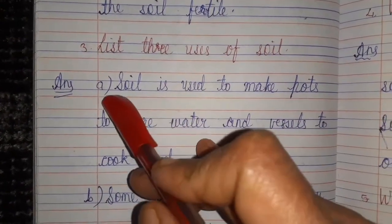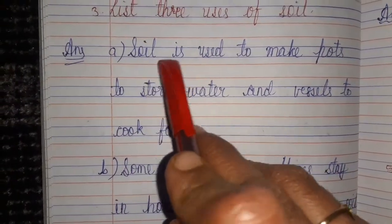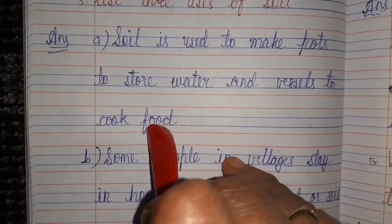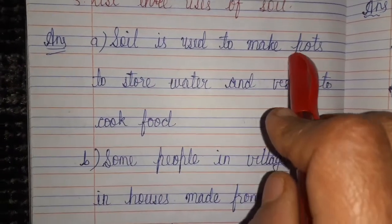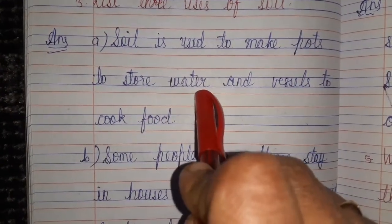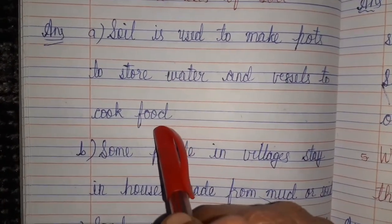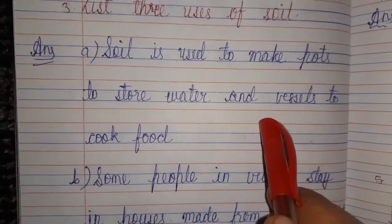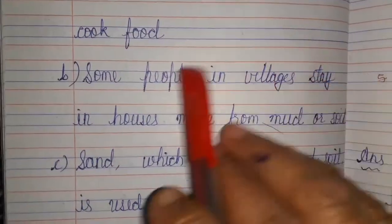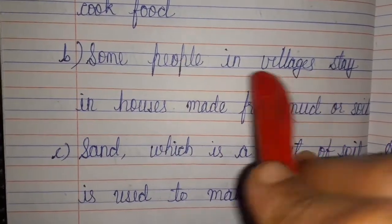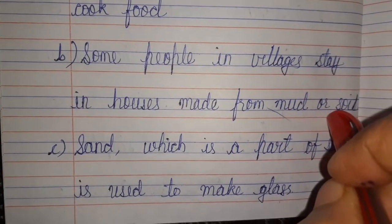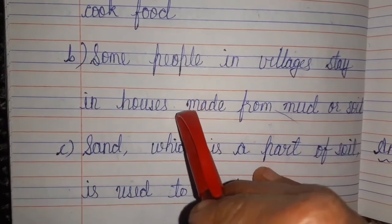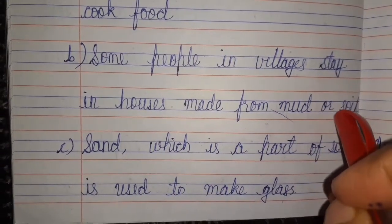Many uses of soil are given. From soil we make pots (matke) and in pots we store water. And vessels to cook food — the cookware we use is also made from soil. Some people in villages stay in houses made from mud and soil — they live in huts (jhopde) whose walls are made from mud and soil.